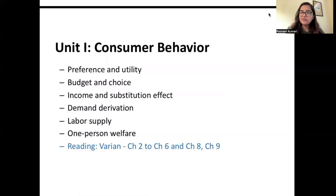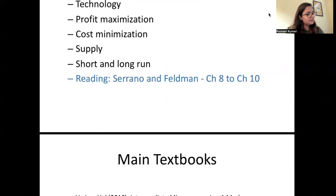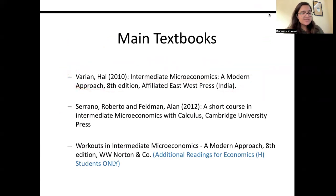The first unit is consumer behavior — going in depth on consumer preferences, utility, how a consumer with a given budget chooses goods, income effect, substitution effect, how to derive demand for the consumer, how to determine labor supply, and welfare. The readings for this entire unit will be from Hal Varian's 'Intermediate Microeconomics: A Modern Approach', eighth edition. The other book referred to will be Sereno, Roberto, and Feldman's 'A Short Course in Intermediate Microeconomics with Calculus'.